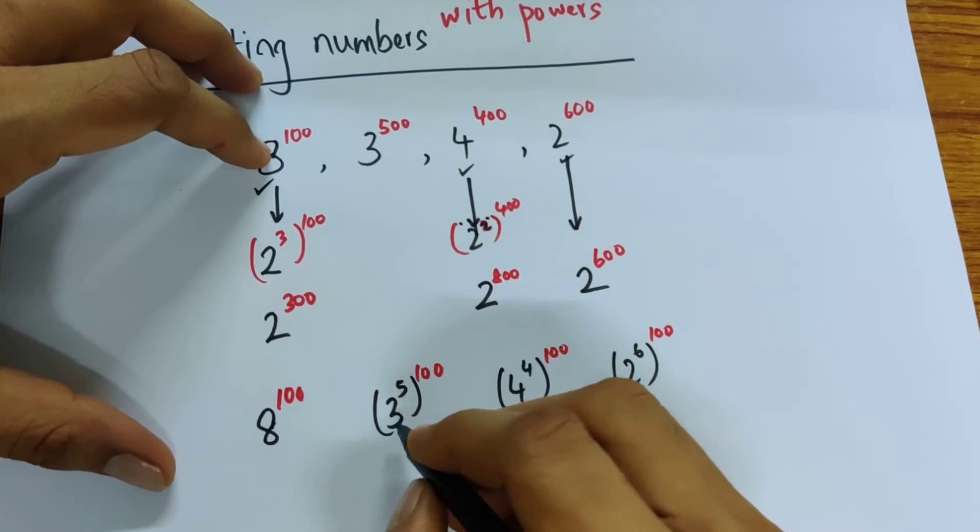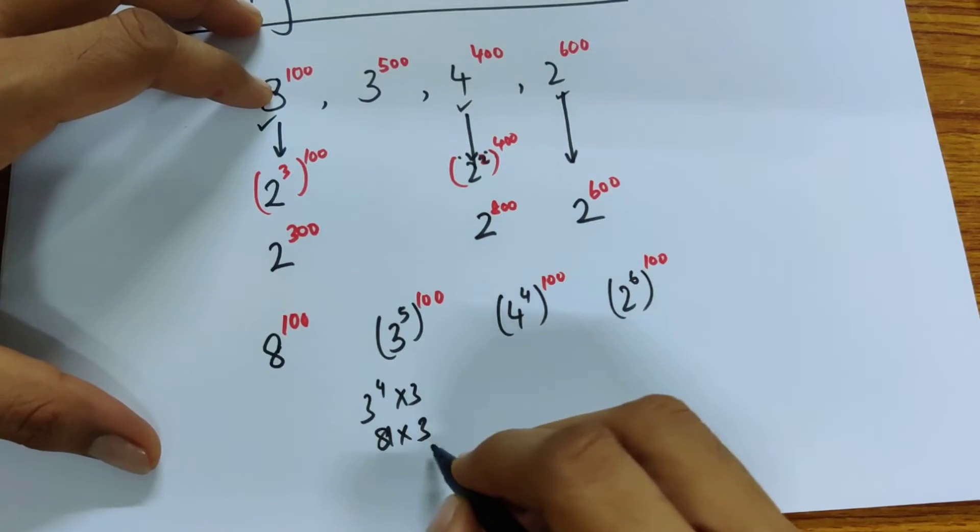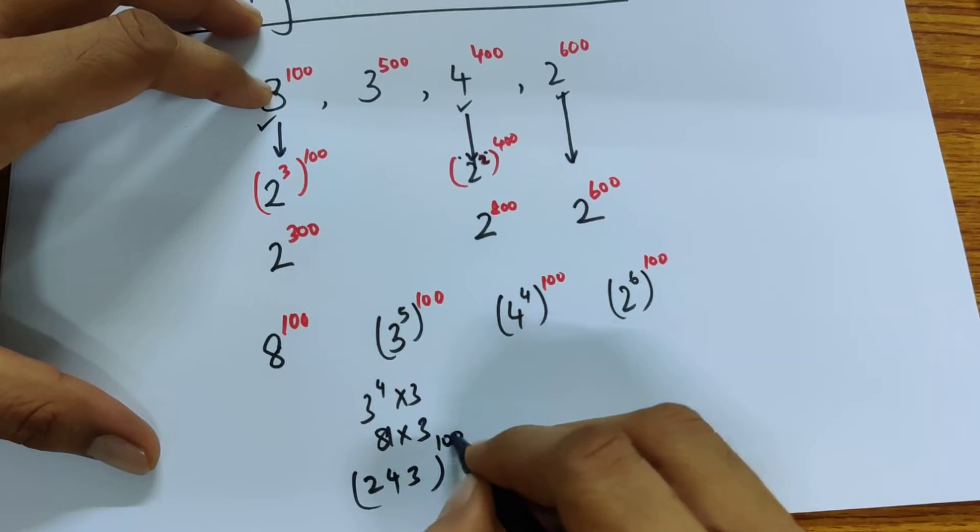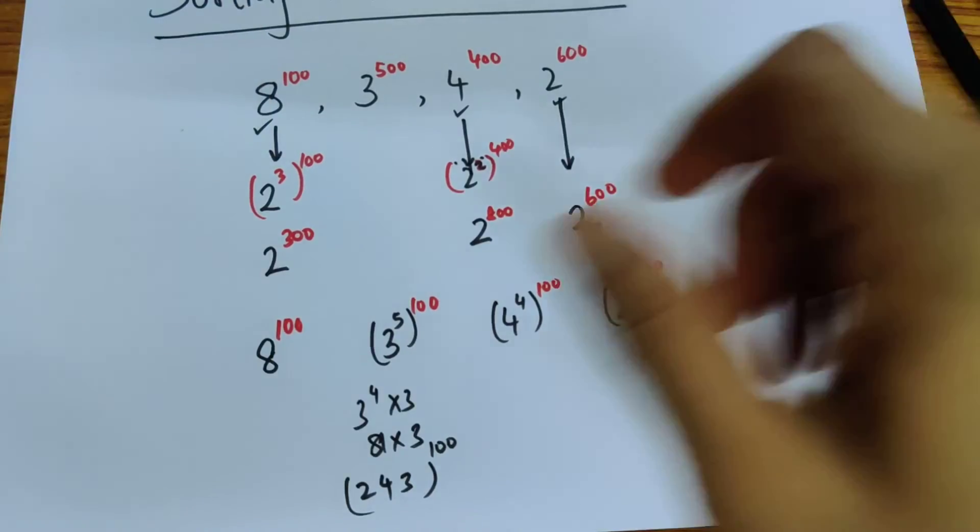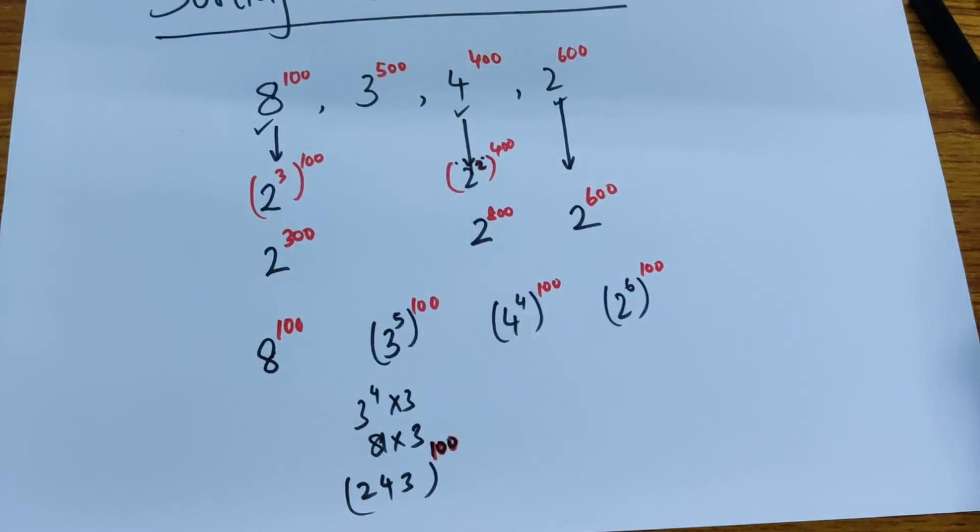3 cubed is 27, 3 to the power of 4 is 81, and 81 times 3. That will be this number, which is 81 times 3, which equals 243. So that's 243 to the power of 100. We'll write 100 in red since it's common. So that's clear.